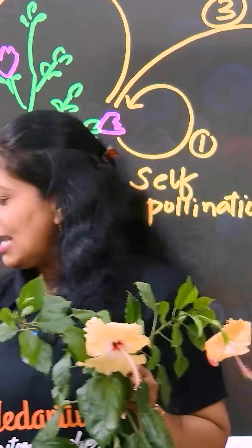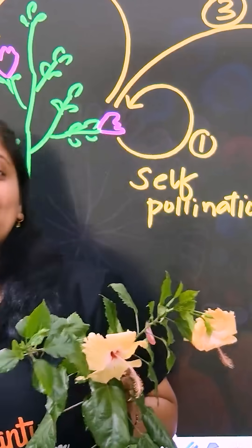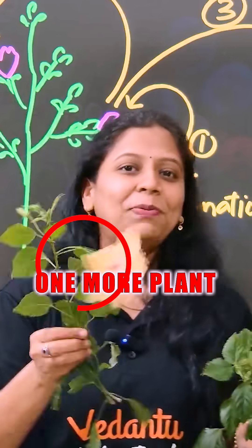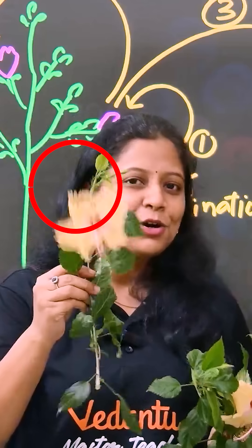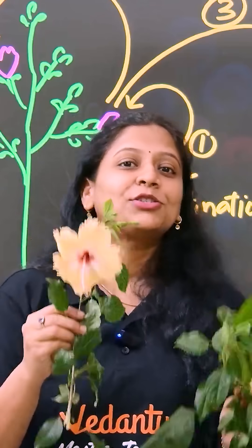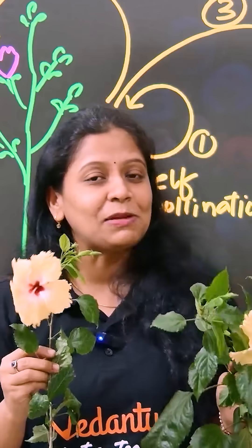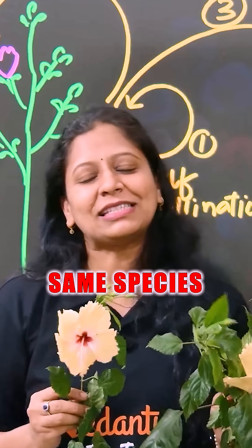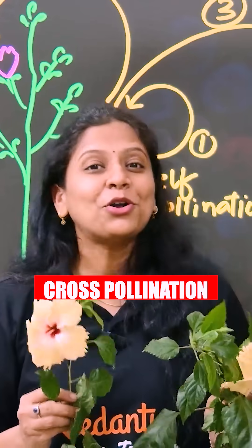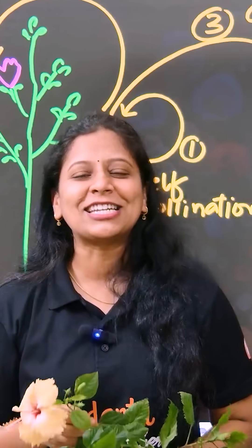If I bring one more plant here, imagine it — another plant. So if pollination happens between two different flowers of two different plants, but of the same species, we have cross-pollination.